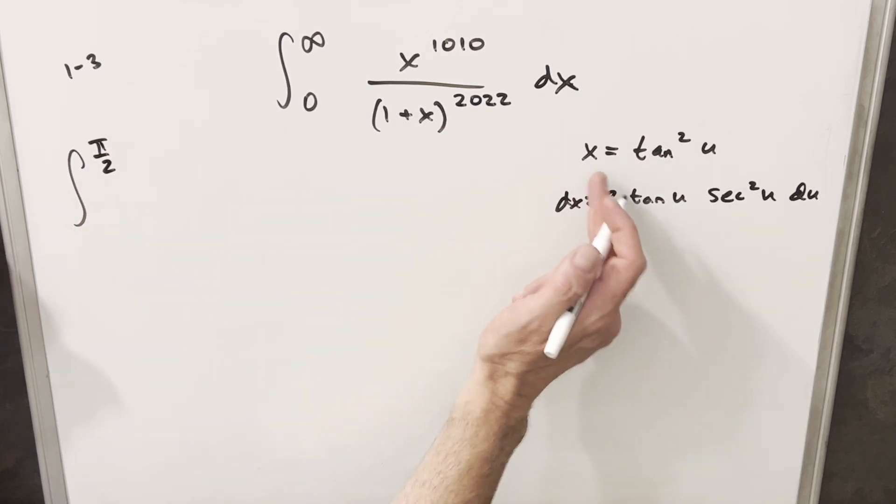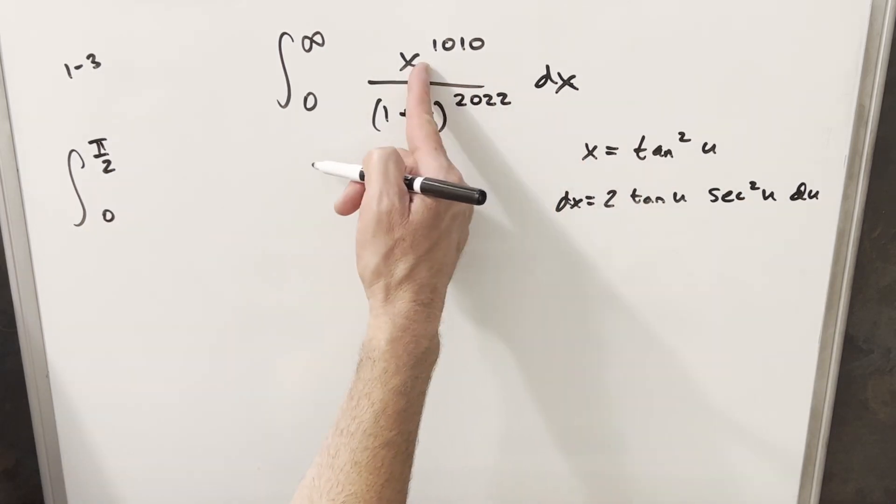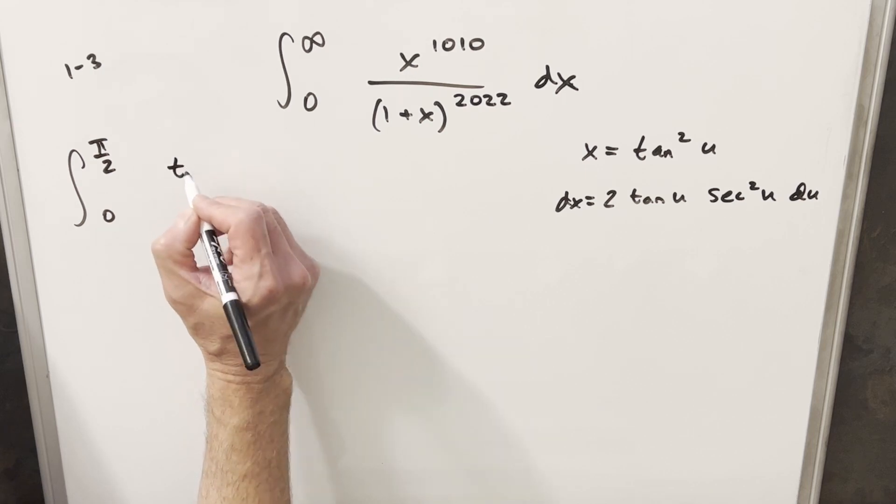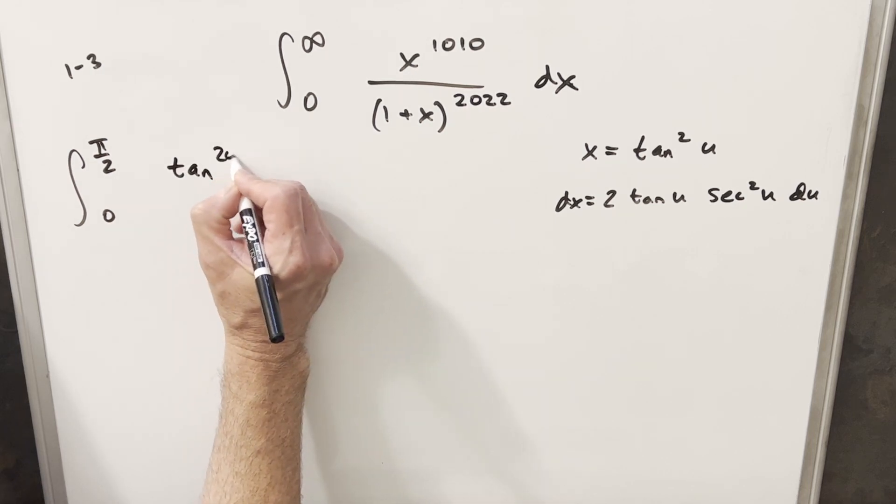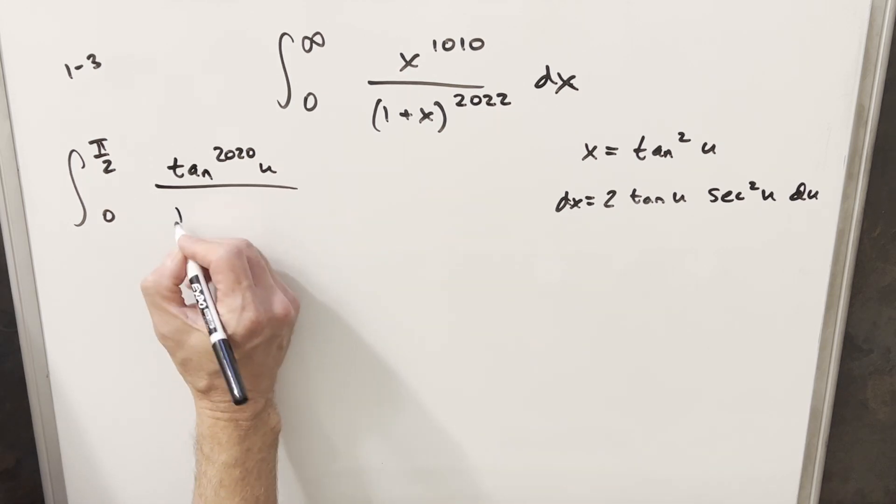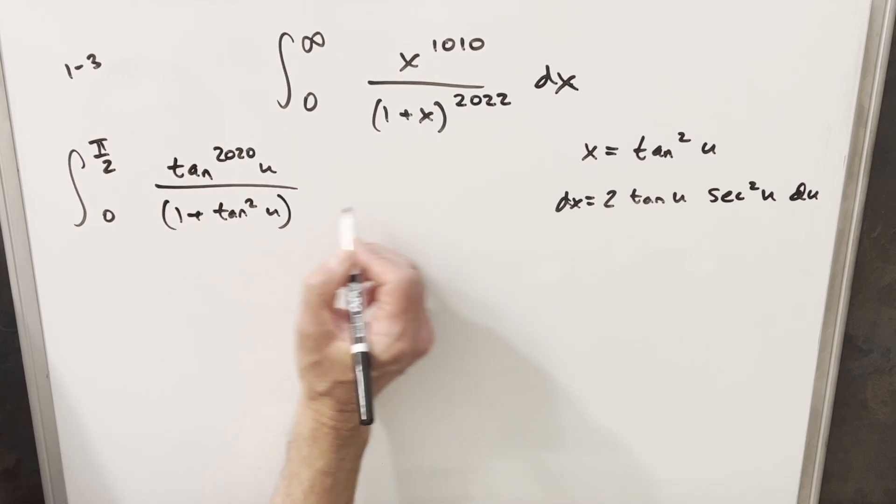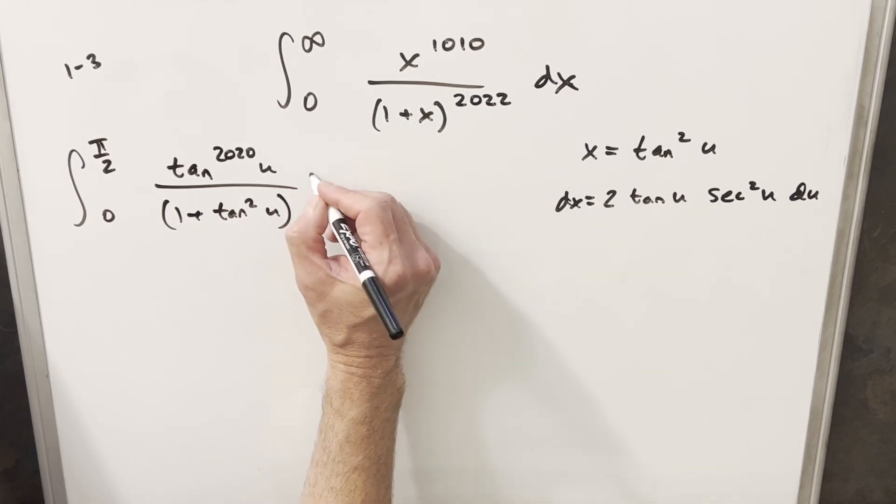And then for 0, if x is 0, that means that u needs to be 0. Then substituting in tan squared for x, this is going to just double it. It's going to become tan to the 2020 of u. In our denominator, this is going to become tan squared. So we're going to have 1 plus tan squared of u. And our dx term is going to be this thing.